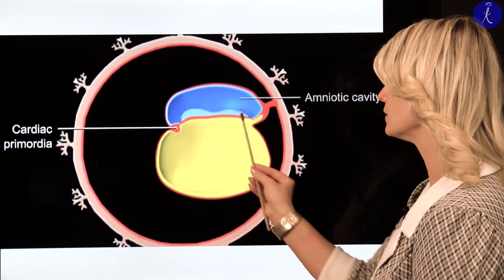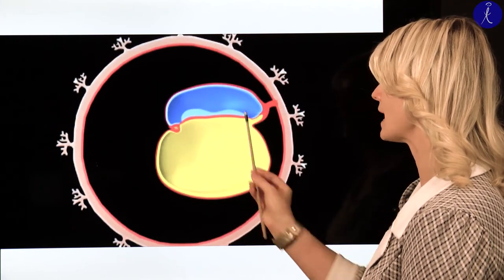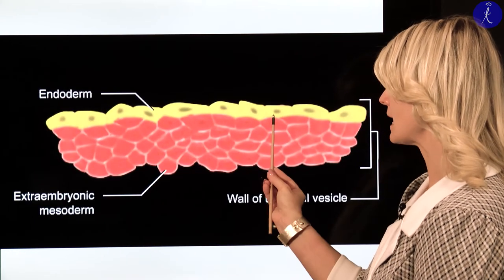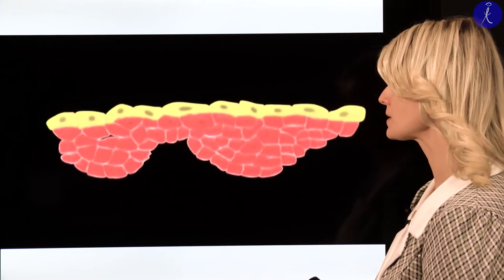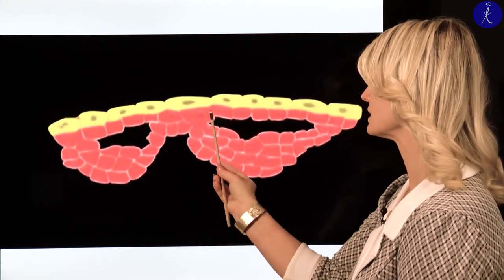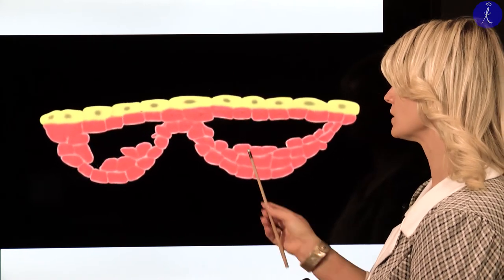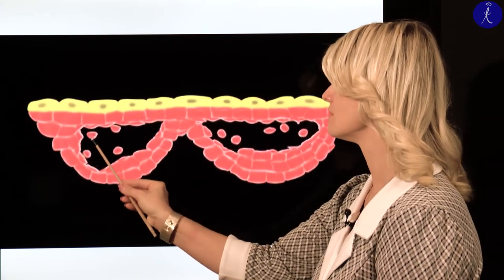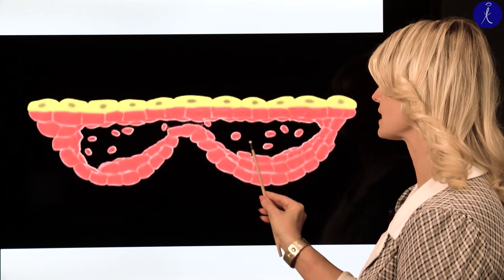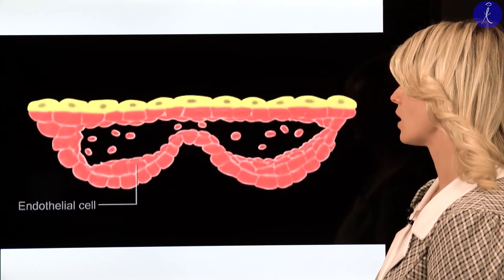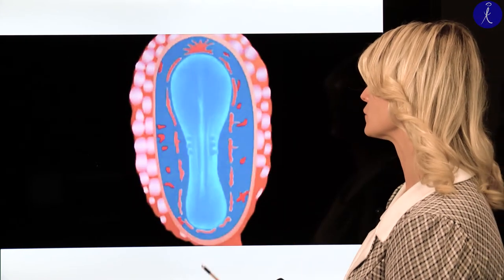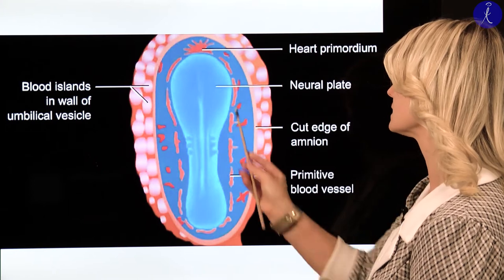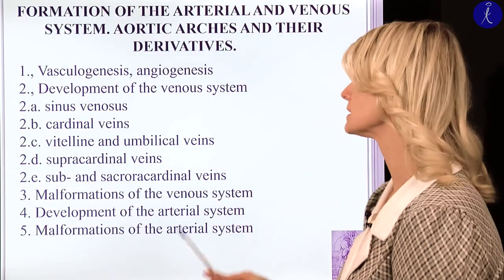Here you can see the embryo: the ectoderm, the endoderm, and the mesoderm. The cardiogenic field is inside, and here you can see the special cells which will form the angiogenic clusters. From these cells we will develop two different cell types — one which will form the wall of the vessels, and the innermost cells will form the cells of the blood. So endothelial cells and the primitive blood cells you can see in the picture. This is the superior view of the embryo showing the blood island and the heart portion.